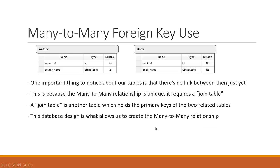One important thing to notice about our tables here is that there's no link between them just yet. This is because the many-to-many relationship is unique, and it requires something called a join table. A join table is another table which holds the primary keys of the two related tables. There's actually a third table that we're going to create that holds the primary keys of both the author and the book tables.